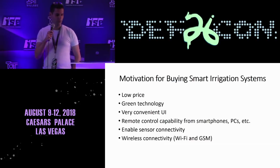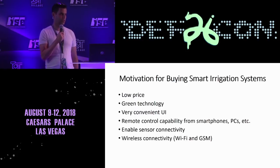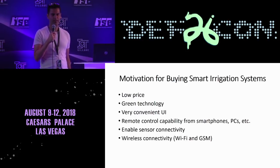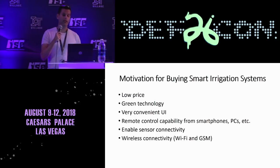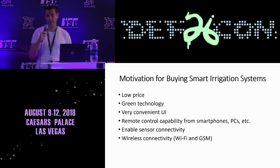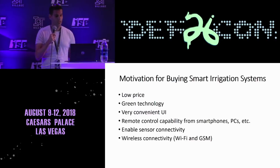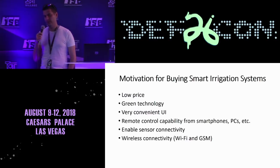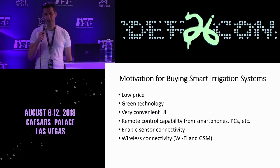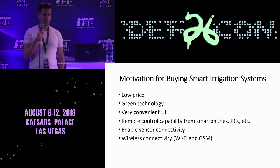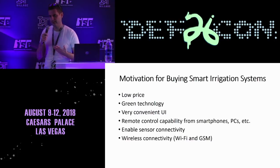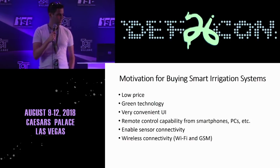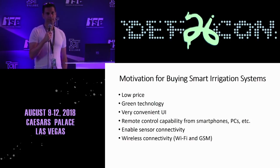Now let's talk about the motivation for buying smart irrigation systems. First of all they are very cheap — their price starts at about $150 and you can buy them on Amazon. They are considered green technology, designed to save money and water. They provide a very convenient remote user interface compared to traditional irrigation systems, which you can use via smartphones, PCs, and even smart assistants. They also enable sensor connectivity and wireless connectivity, providing Wi-Fi and GSM additions.